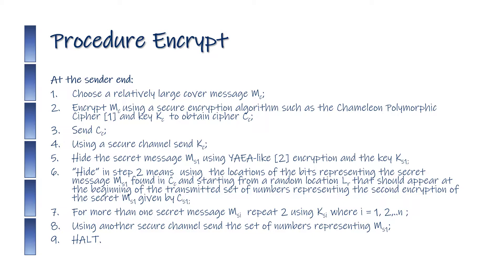Hide the secret message MS1 using YAEA-like encryption and the key KS1. 'Hide' means using the locations of the bits representing the secret message MS1 found in CC, starting from a random location LR that should appear at the beginning of the transmitted set of numbers representing the second encryption of the secret MS1, given by CS1. For more than one secret message, repeat step 2 using KSi where i equals 1 to N. Using another secure channel, send the set of numbers representing MS1. Halt.